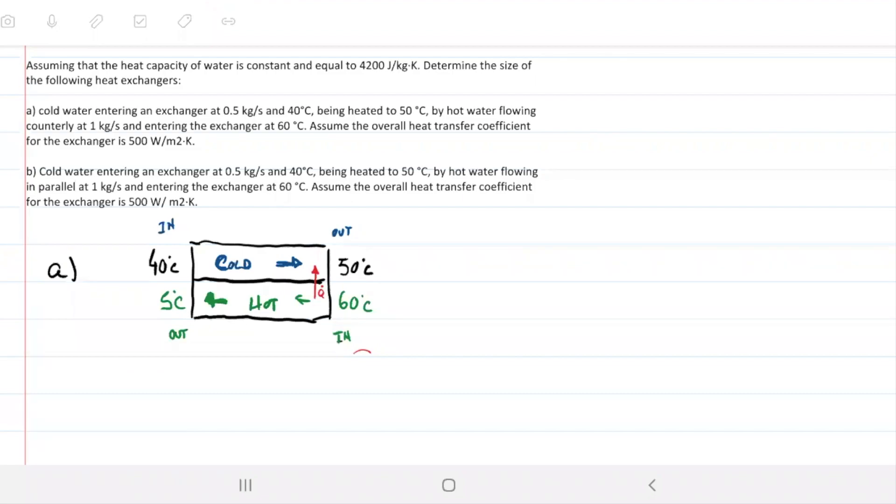Assuming that heat capacity of water is constant and equal to 4200 joules per kilogram per kelvin, determine the size of the following heat exchangers.